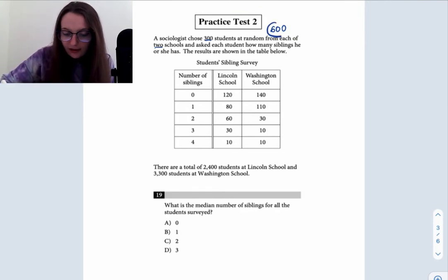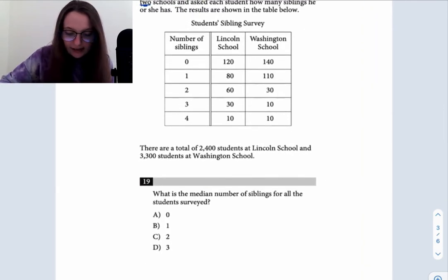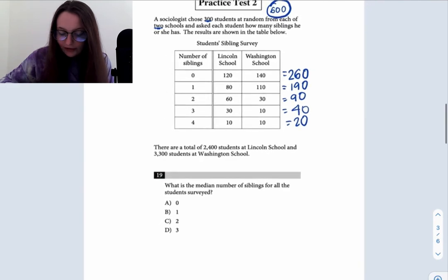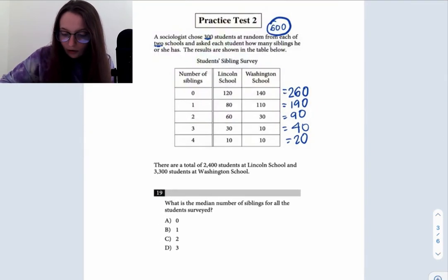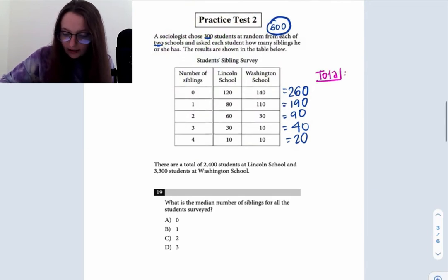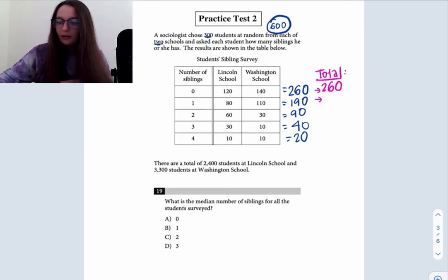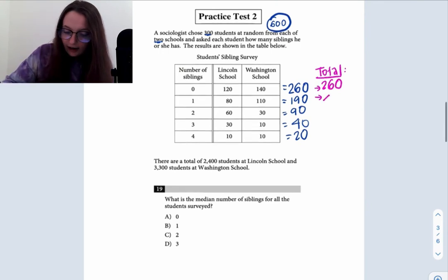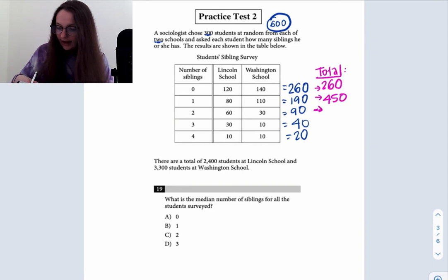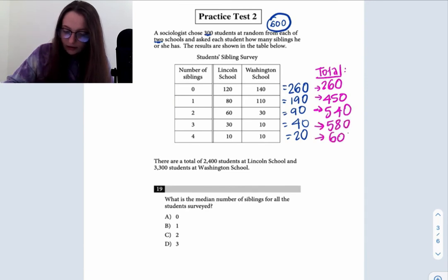We know that there are 600 students who were surveyed, 300 at two different schools. Let's sum up how many students had each respective number of siblings. 260 kids had no siblings, 190 kids had one, 90 kids had two, 40 kids had three, and 20 kids had four. What we want to do is figure out the cumulative total at each respective point. So at zero siblings, we have 260 students. When we get to one sibling, 260 plus 190 gives us 450 students. At two siblings, we've occupied 540 students, then 580, and then all 600 once we get to four siblings.